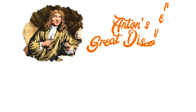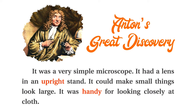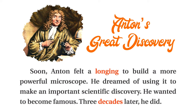Anton's Great Discovery. Anton van Leeuwenhoek was a Dutch cloth merchant. His life began to change after he got his first microscope in 1653. It was a very simple microscope. It had a lens and an upright stand. It could make small things look large. It was handy for looking closely at cloth. Soon, Anton felt a longing to build a more powerful microscope. He dreamed of using it to make an important scientific discovery. He wanted to become famous. Three decades later, he did.